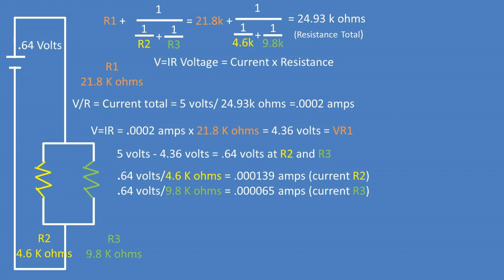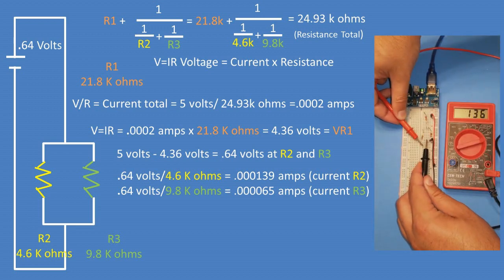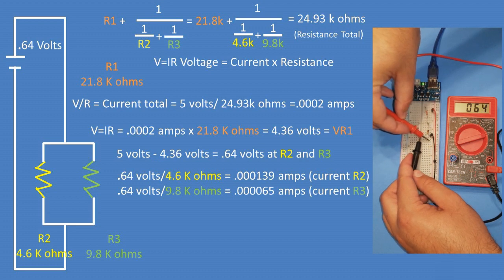Now to get the current at each resistor, we can take the voltage at R2 and R3 and divide it by the resistance value of each resistor. At R2, we have a current of 0.139 milliamps, and at R3, we have a current of 0.065 milliamps.